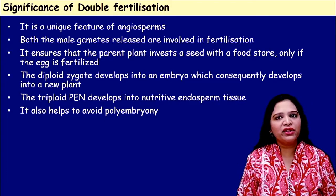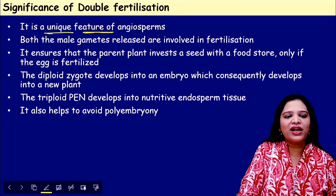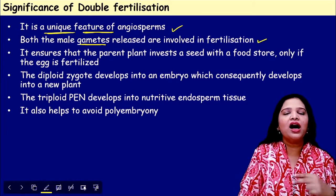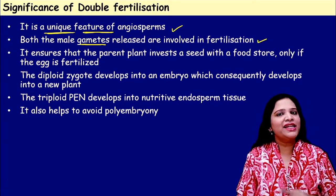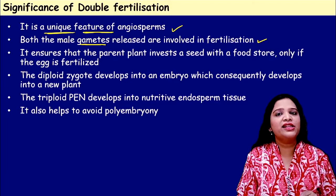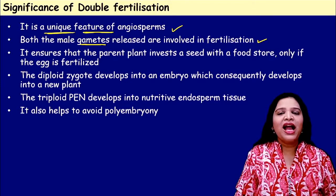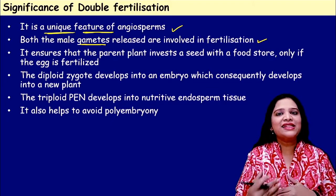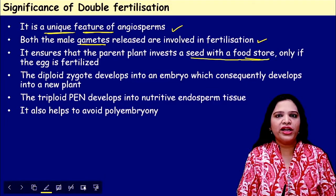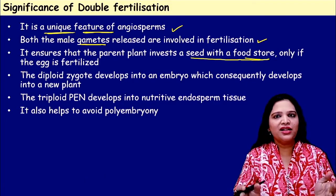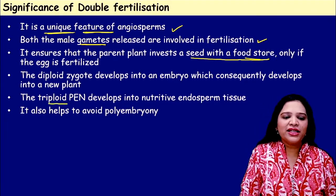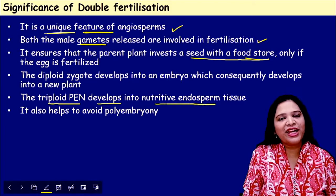What is the significance of double fertilization? It is a unique feature occurring only in the angiosperms. Both male gametes are successfully utilized in fertilization. In the first fertilization the zygote — the embryo — is formed, and to support the growing embryo, the second fertilization produces the endosperm, which acts as a food storage reservoir. The triploid PEN develops into the nutritive endosperm tissue.